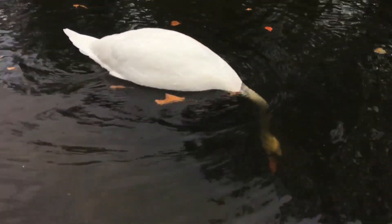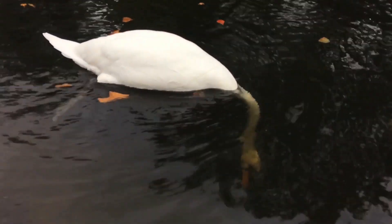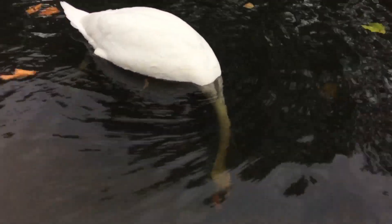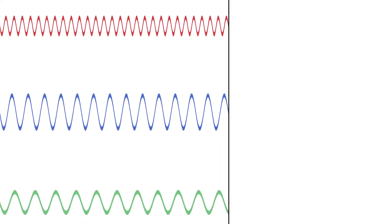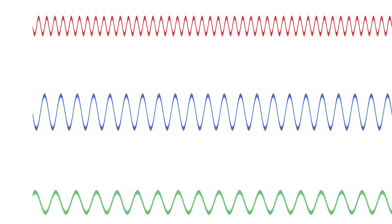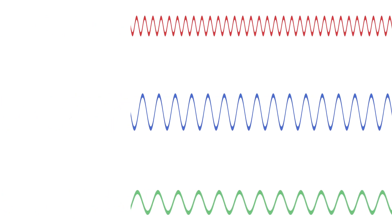With regards to dispersion, we can talk about two types of mediums. In the first type, the speed of the wave only depends on the medium, not the wavelength. These are also called non-dispersive waves. All waves in them will travel at the same speed, no matter what.